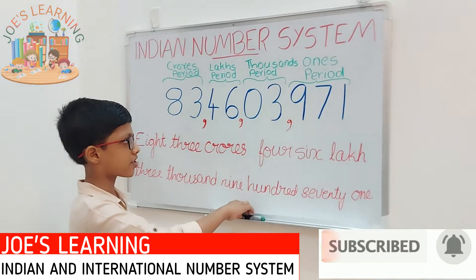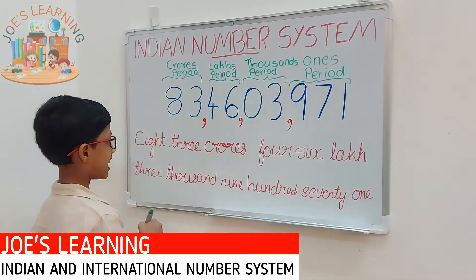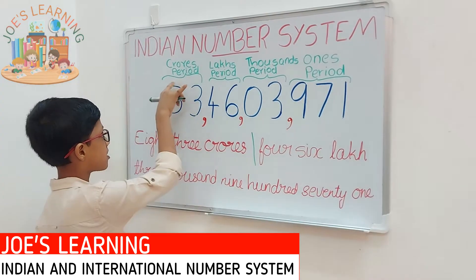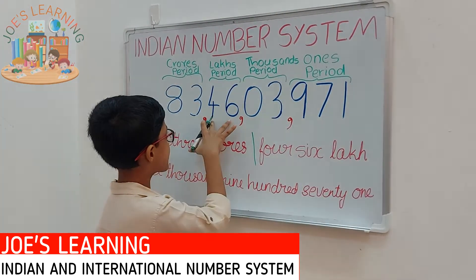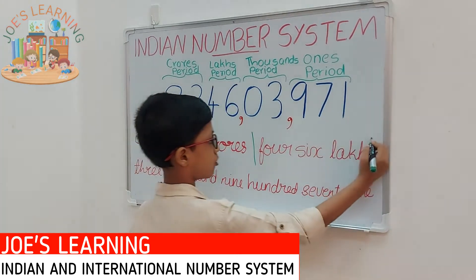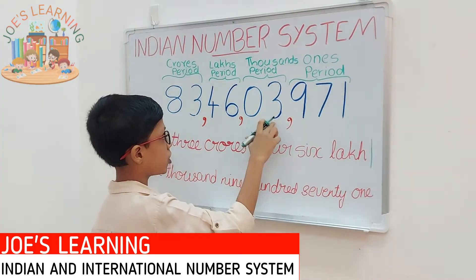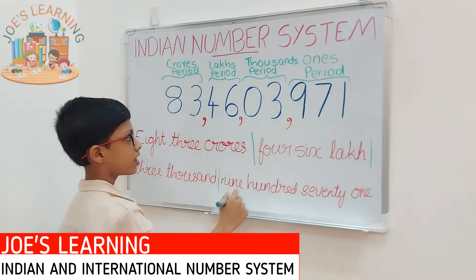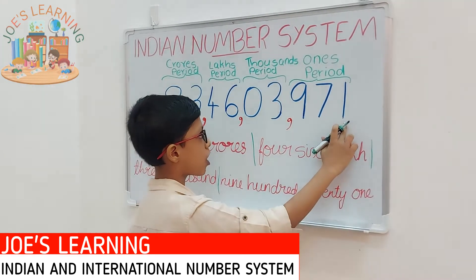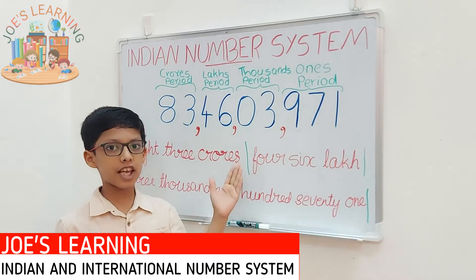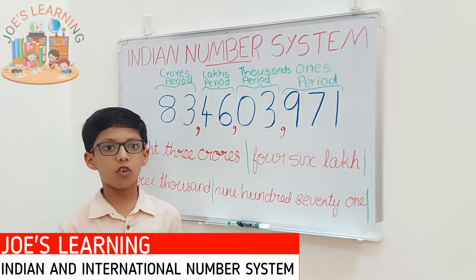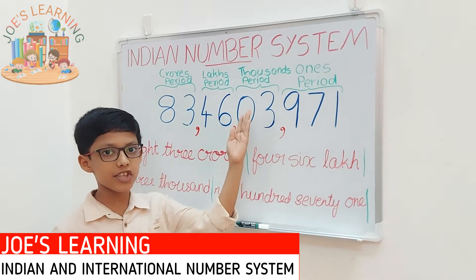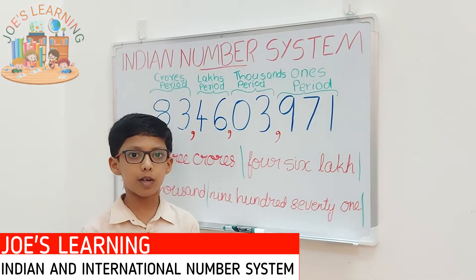Based on these periods, we can write the number name of this number. The number name will be 83 crores, because there are 83 in the crores period, then 46 lakh in the lakhs period, then 3000 in the thousands period, then 971 in the ones period. In the same way we can read or write any number using the Indian number system.